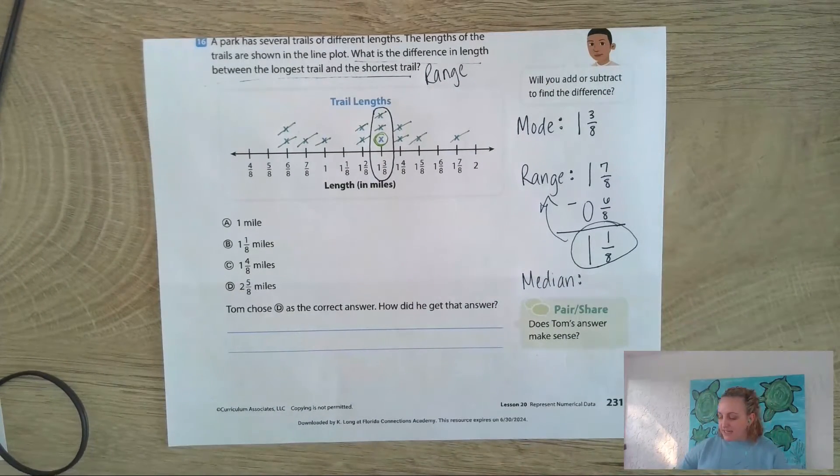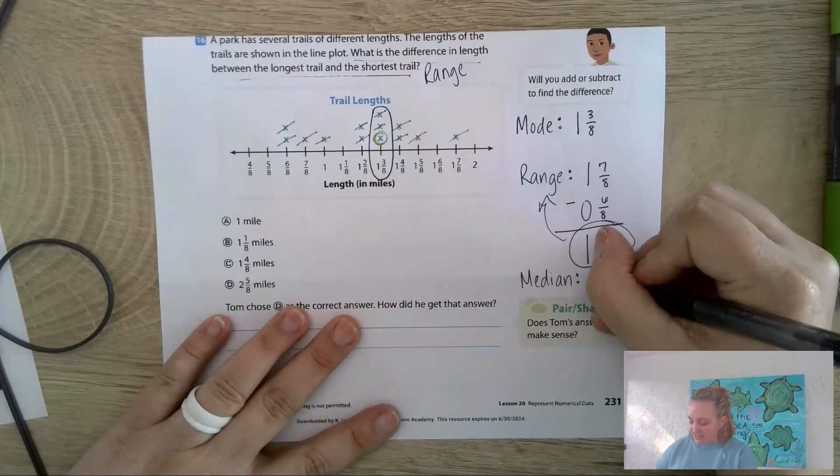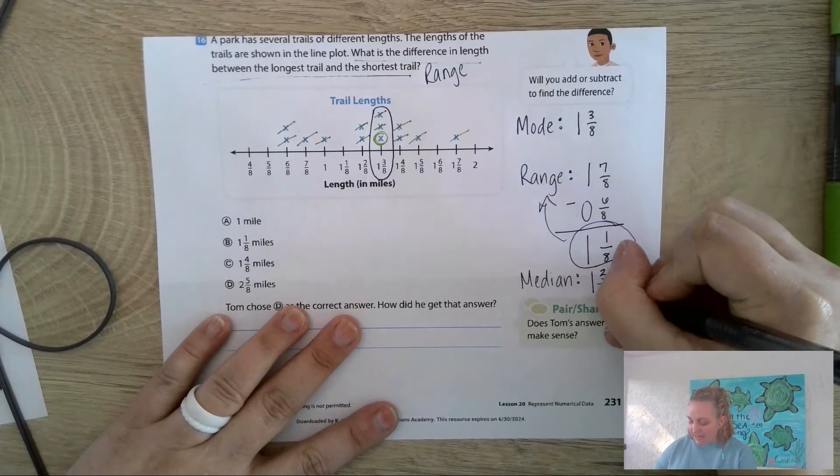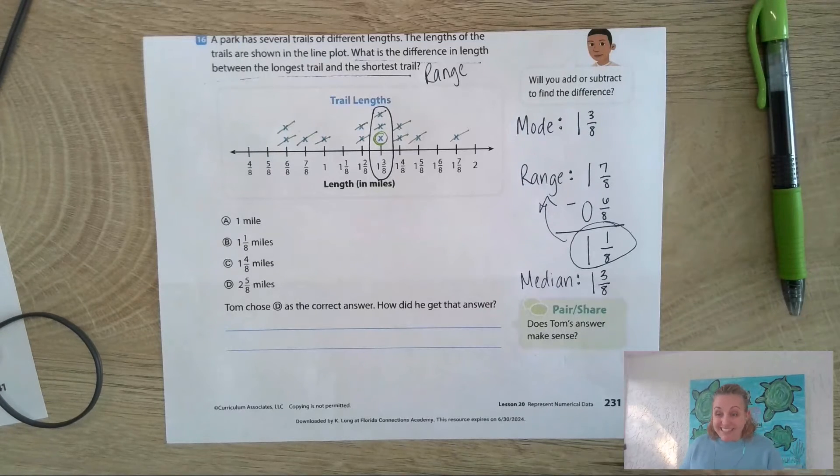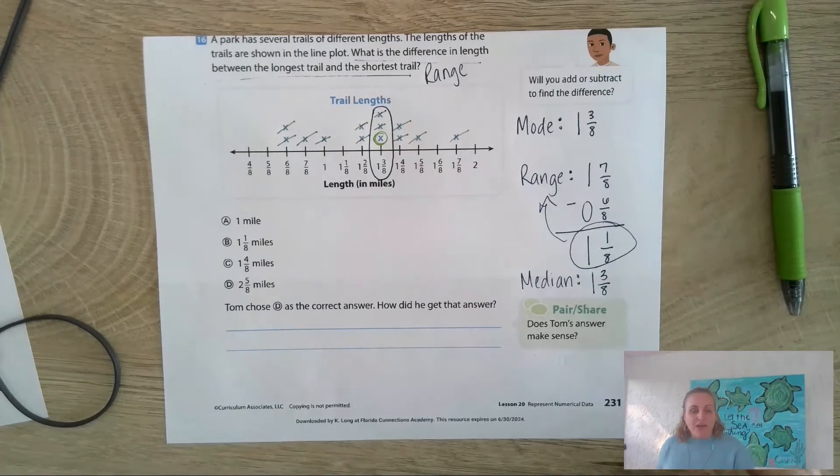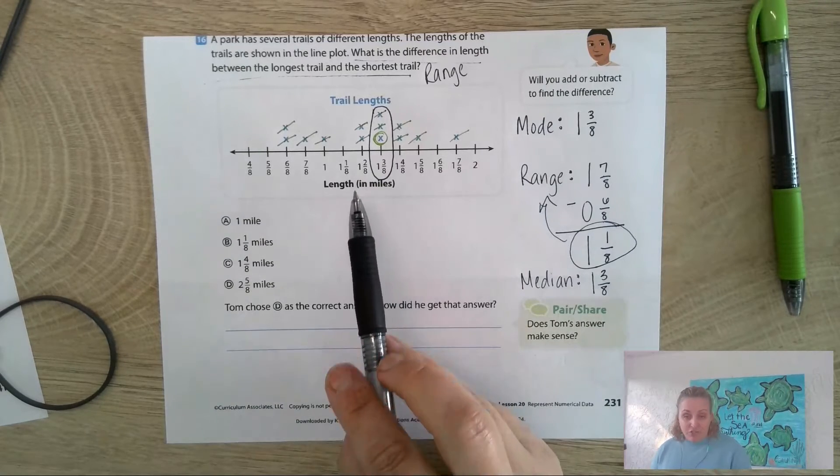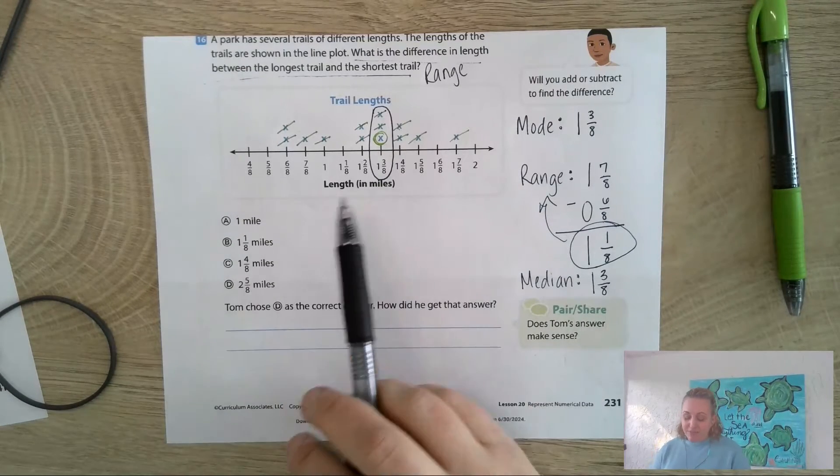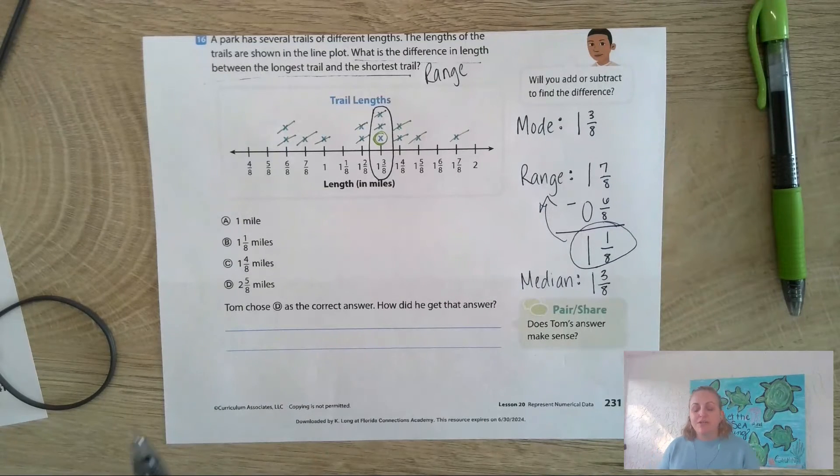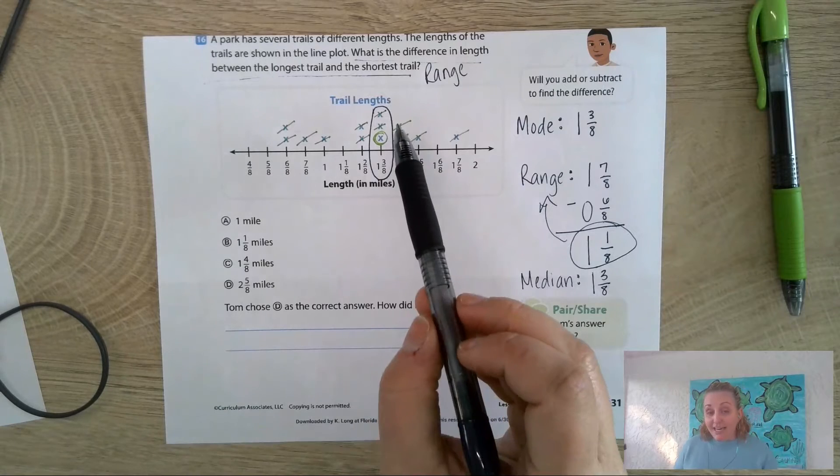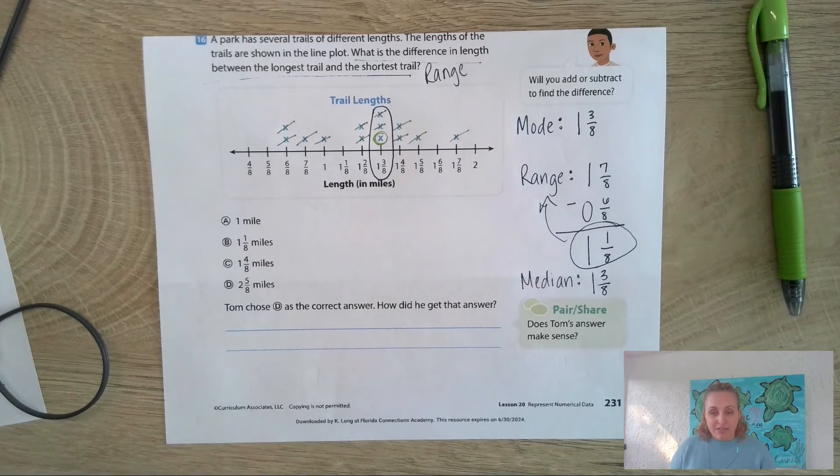Our median is 1 and 3/8. In this case, our median and our mode are the same. We see that happen a lot. But I do want you to realize we would have gotten the answer wrong had we picked the middle number in the line plot. It's not the middle number, it's the middle data point. With line plots, the X's are the data points.